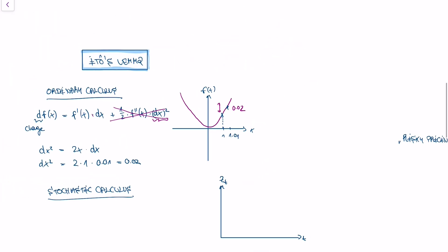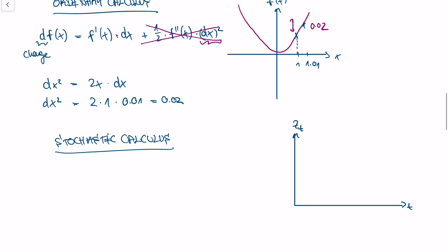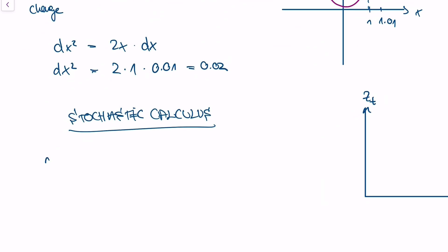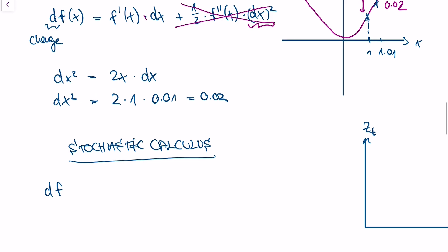Now we need to get into stochastic calculus. In stochastic calculus, we're talking about the change in the value of a function that does not depend on an ordinary variable x, but on Brownian motion, zt.